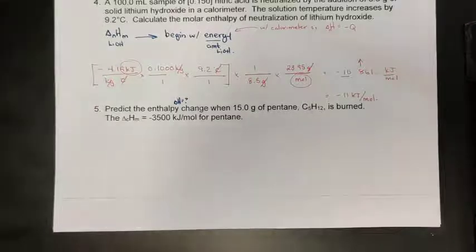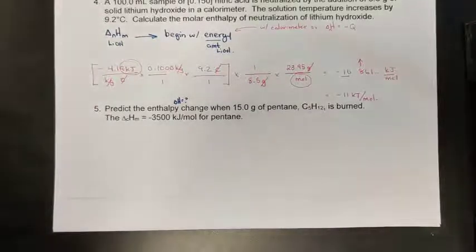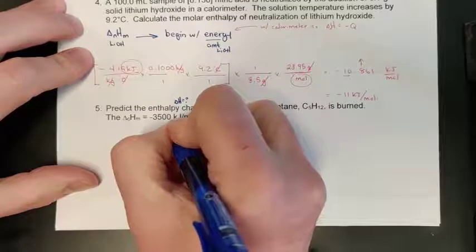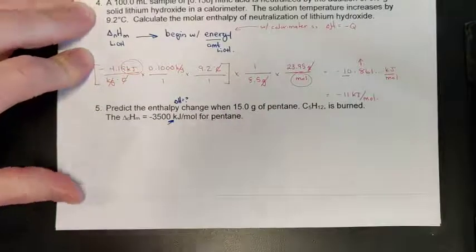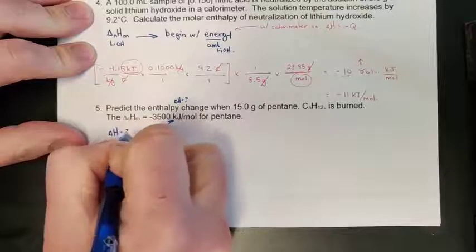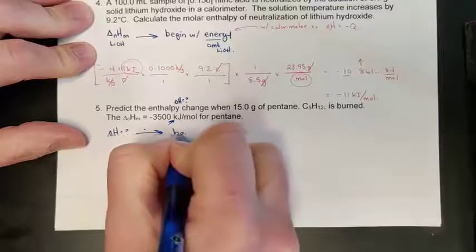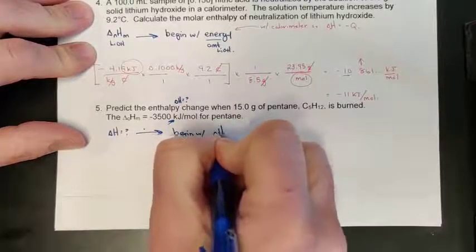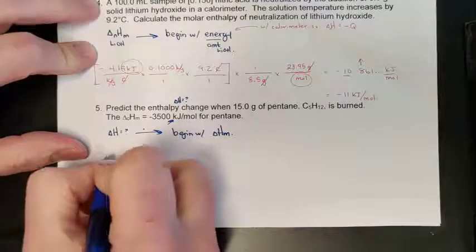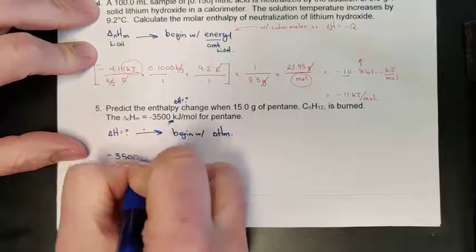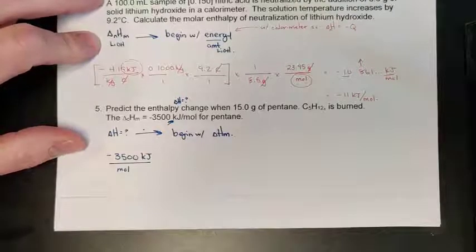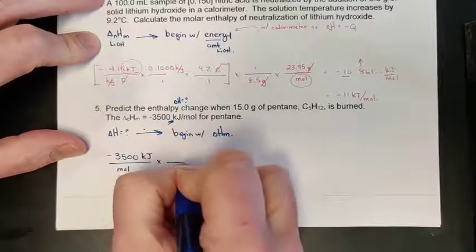When we're looking for the energy released and we're given molar enthalpies, that's a great starting point because there's an energy term right there. So for this one we begin with delta H_m, which gives us units of kJ/mol — negative 3500 kJ of energy for every one mole of pentane burned.